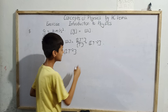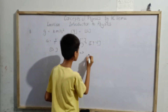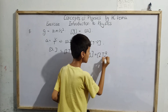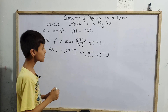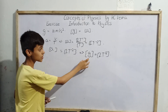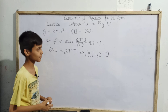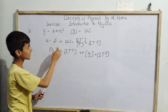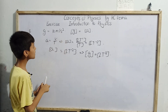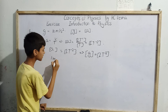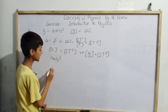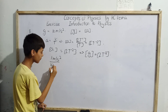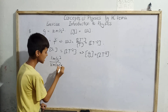Since G and A are both accelerations, their dimensional formulas are the same. So the dimensional formula for G is also LT⁻². Now, according to this dimensional formula, we will solve. We have G = 10 meters per second square. We write 1 meter per second square and convert it to centimeter per minute square.